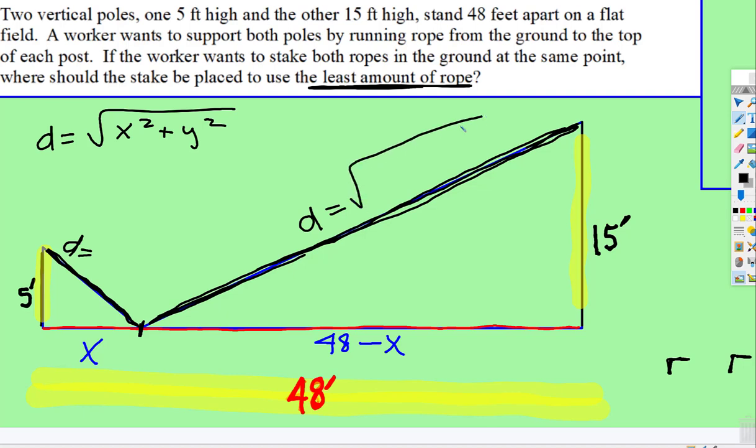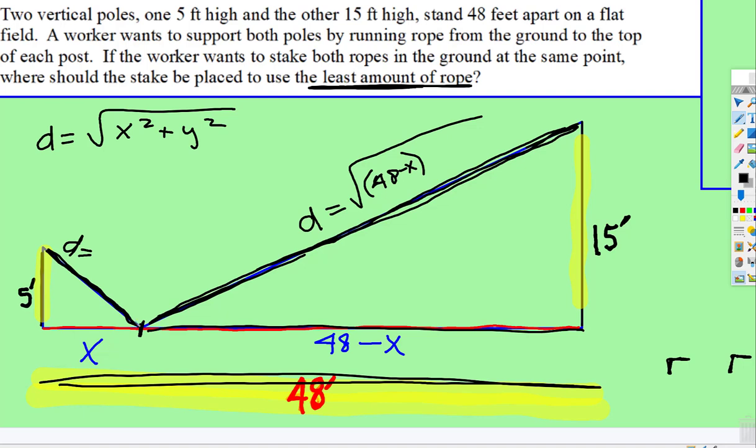So, the square root, this side, this x value, this length, is 48 subtract x. Because if the whole length, if they're 48 feet apart, but right there, at some place,